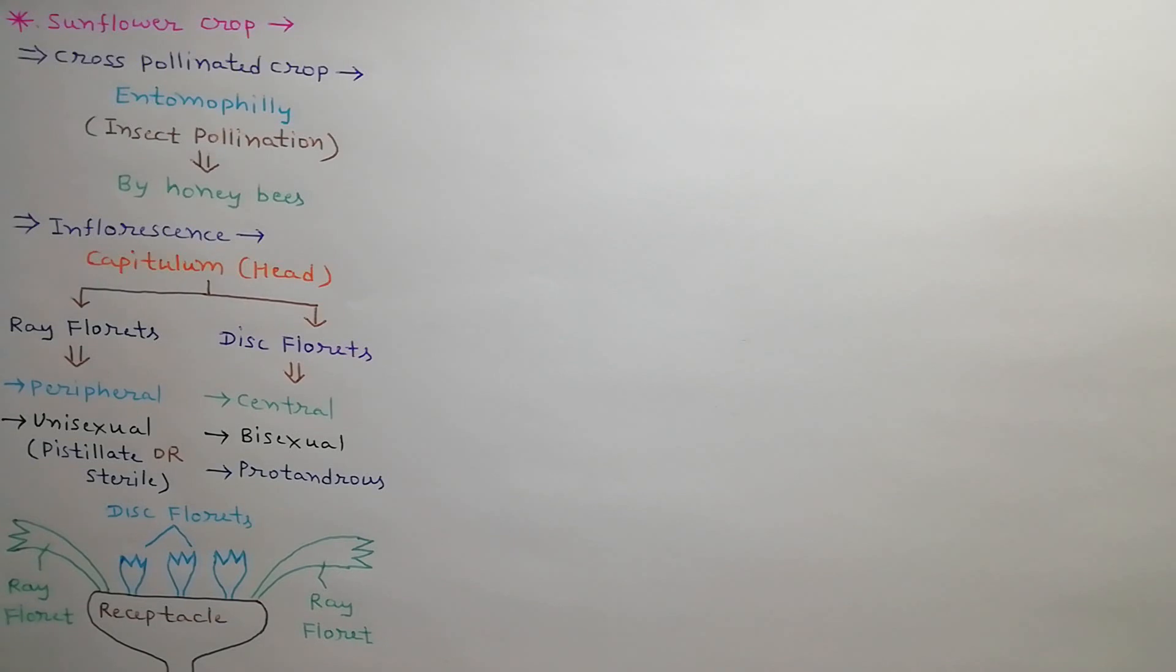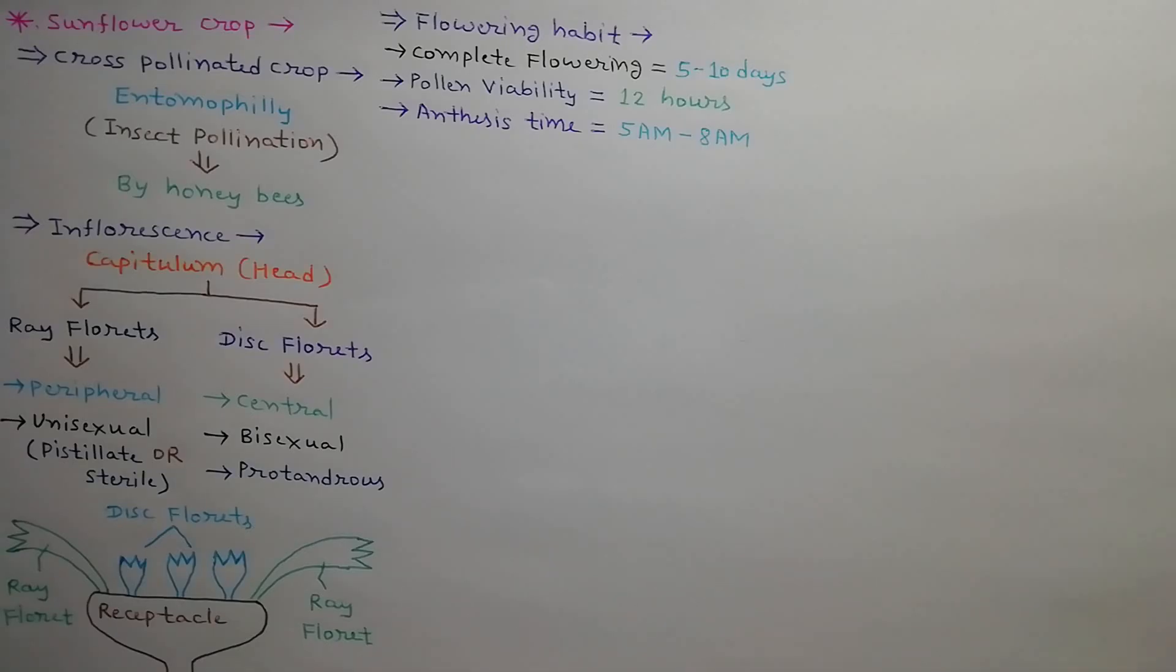The receptacle is the base of the head which holds both ray and disc florets as shown in the diagram. In sunflower, flowering completes in 5 to 10 days. Pollens remain viable for 12 hours. Anthesis occurs in the morning between 5 am to 8 am.